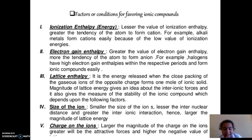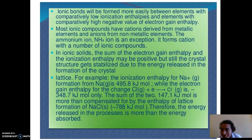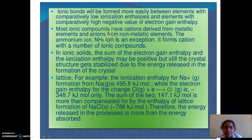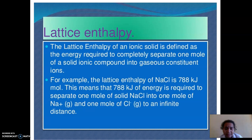The next factor is lattice enthalpy. We discussed that elements with low ionization energy and high electron gain enthalpy — such as alkali metals and halogens — will form ionic compounds. In the formation of ionic bonds, energy is involved. Ionic compounds are most commonly formed between metallic and non-metallic elements — for example, sodium is a metal and chlorine is a non-metal.